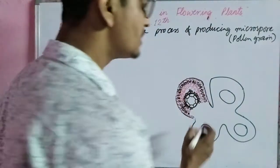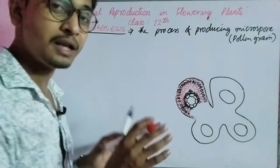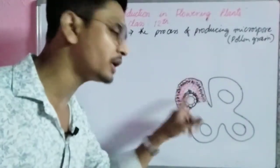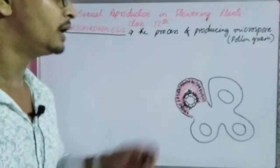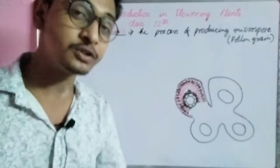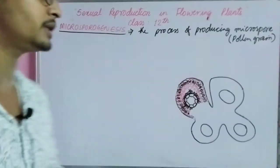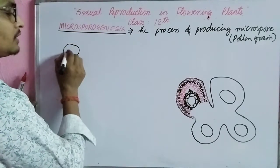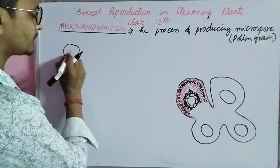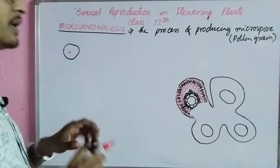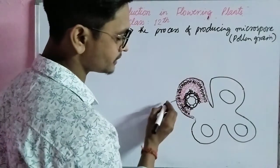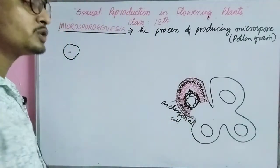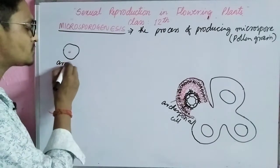Some of the cells of this sporogenous tissue become large in size due to the absorption of nutrients from surrounding cells, and become capable of cell division. Let us suppose this is one single cell — this cell which becomes capable of reproduction is known as the archesporial cell.